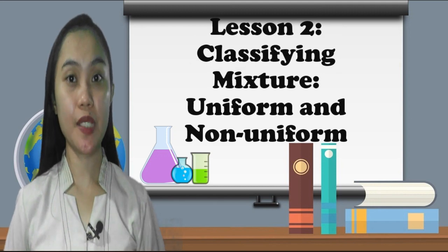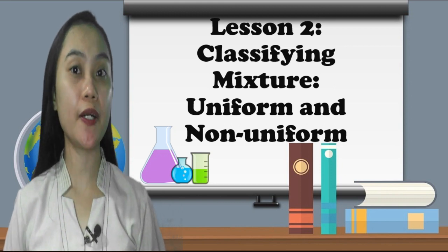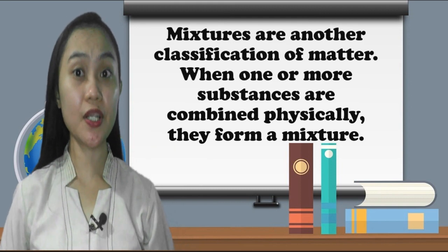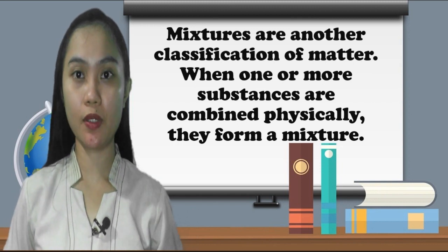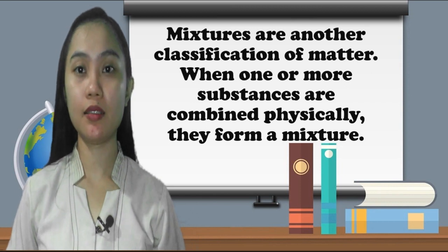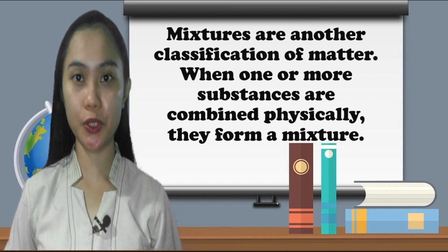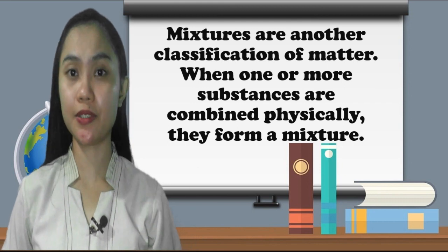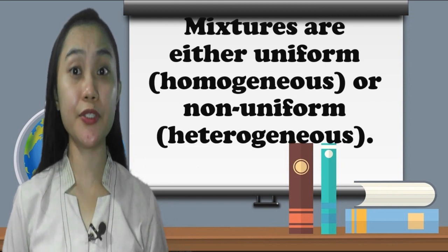Lesson 2: Classifying Mixtures. Uniform and non-uniform mixtures are another classification of matter. When one or more substances are combined physically, they form a mixture. We can actually see a lot of mixtures around us. Mixtures are either uniform or homogeneous, or non-uniform or heterogeneous.